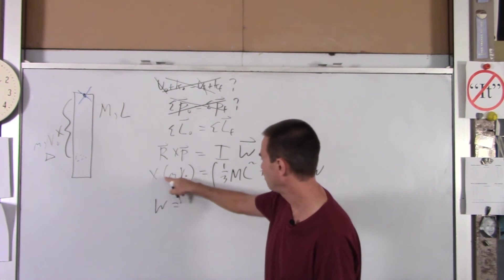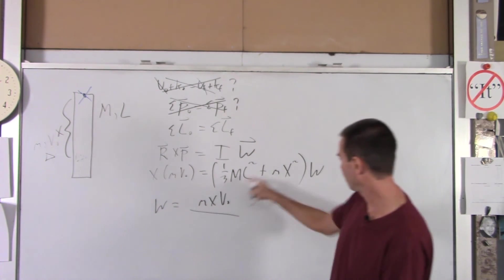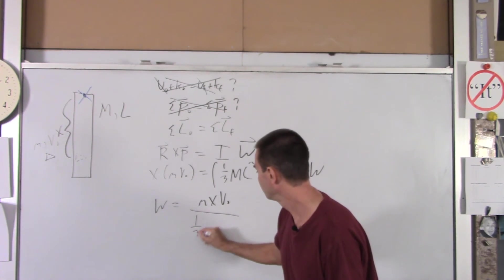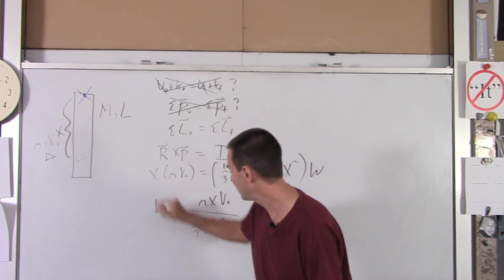And the moment of inertia of point mass is just mr squared, or in this case, m x squared times omega. And that's pretty much it. You solve for omega. So you got omega is, I'll put the x in there, you got m x V0 over all that, which is one-third ML squared plus m x squared. So that's omega.